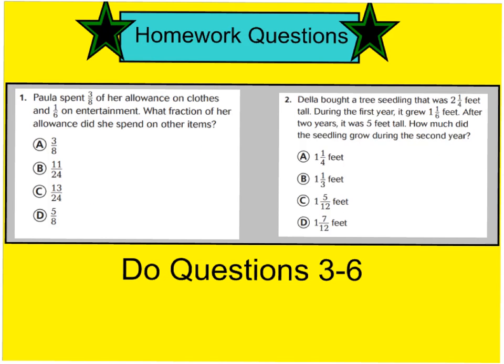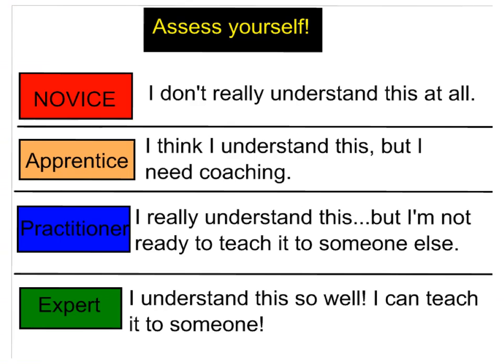Go ahead and turn your page over to the back side. For number one, Paula spent three-eighths of her allowance on clothes and one-sixth on entertainment — remember her allowance is one whole. Work backwards to find what fraction she spent on other items. For number two, read through the question carefully and work backwards to find how much the seeds grew during the second year. Assess yourself at the top of the page: 1 for novice, 2 for apprentice, 3 if you understand but aren't ready to teach it, or 4 if you feel like an expert.